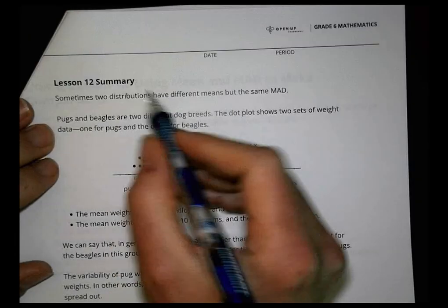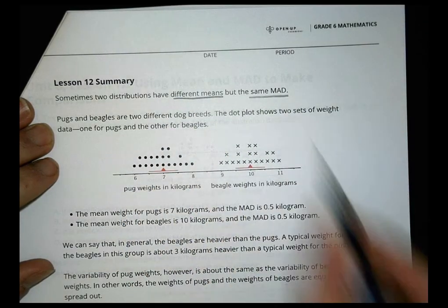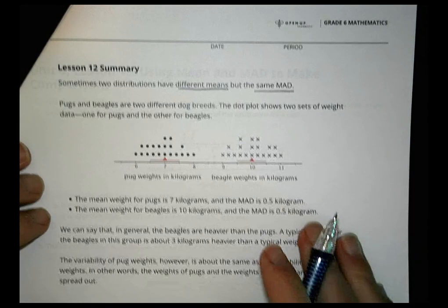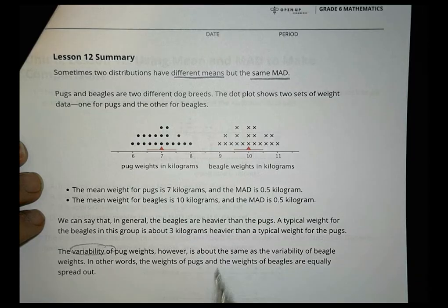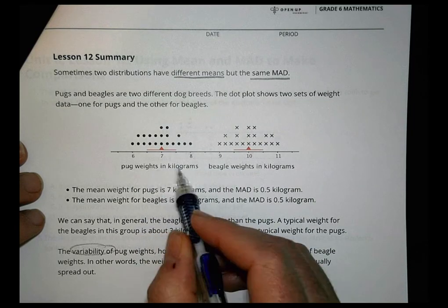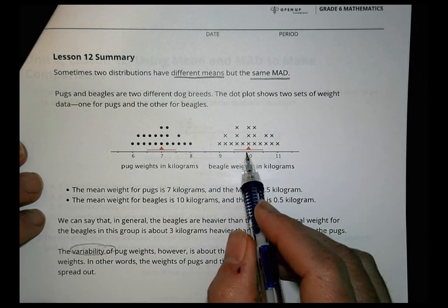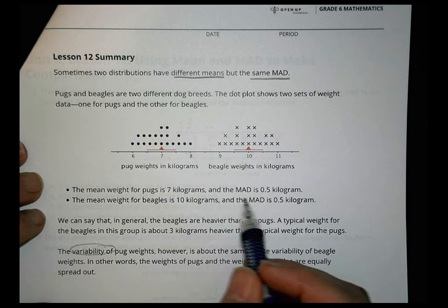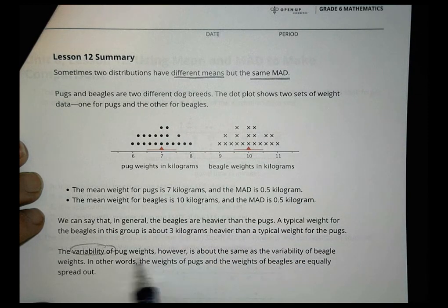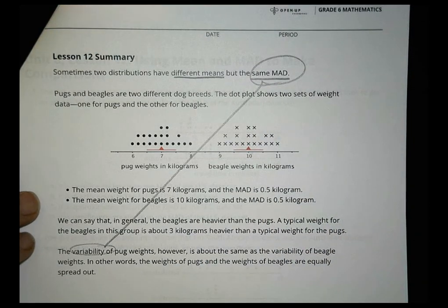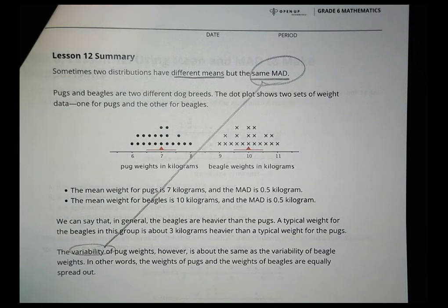In summary, sometimes two distributions have different means but the same mean absolute deviation. For example, if you look at the weight of pugs or the weight of beagles, the means are different but how they vary is the same. The mean absolute deviation is that variability piece. Take some time to work on your homework, and we'll check that together in just a few minutes.